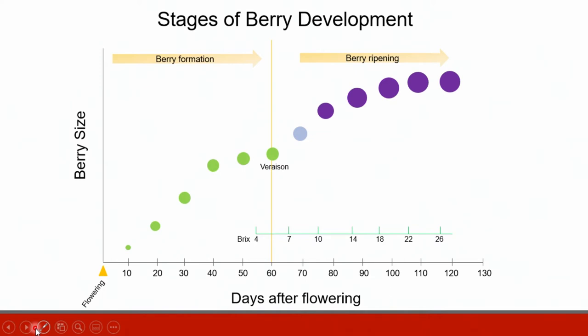Understanding the timing of P. viticola berry infections requires some knowledge of berry development. Berry development occurs in two stages as shown in this figure: berry formation and berry ripening. The berries begin to develop about 10 days after the caps of the flower drop. Berry size increases exponentially for about a month and then growth slows down as the berries reach veraison, which is the stage when the berries begin to turn color and build up sugars.